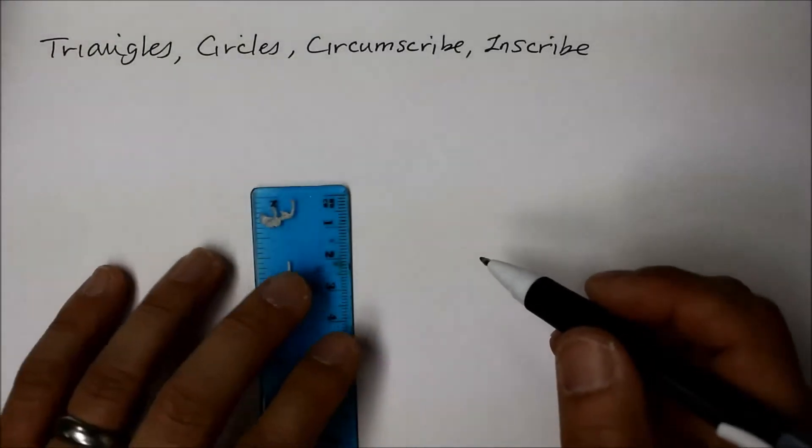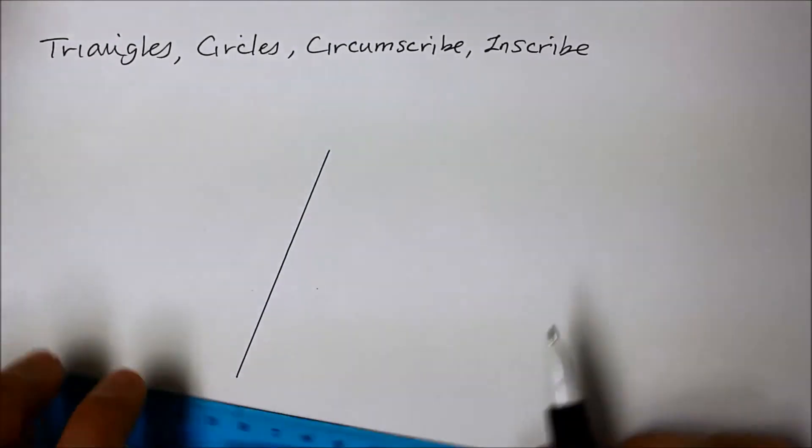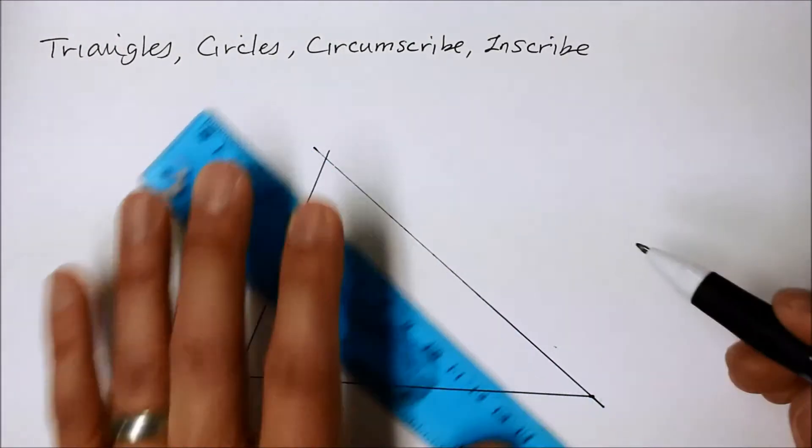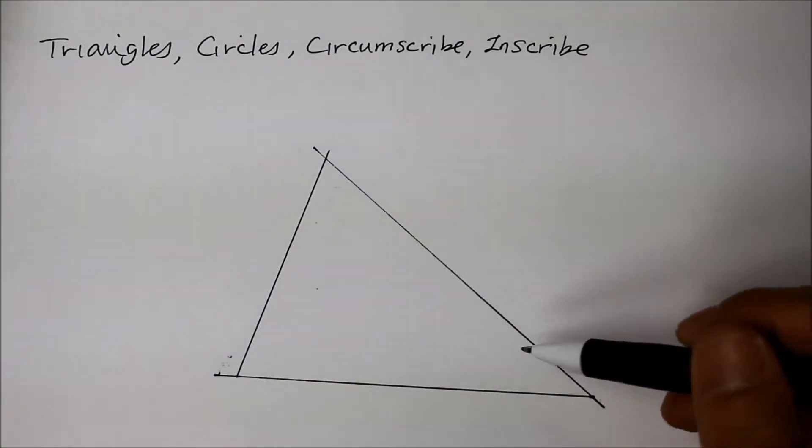Let's start with a simple triangle. Here's one that appears to be an acute triangle.